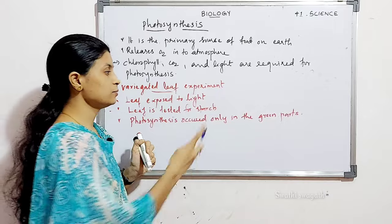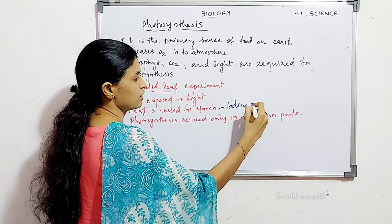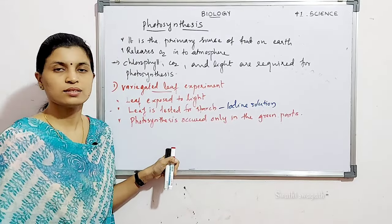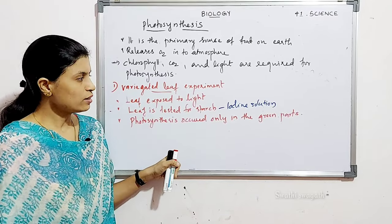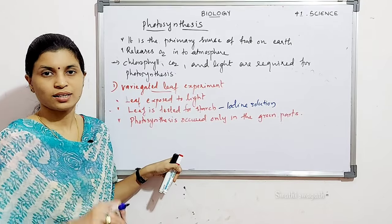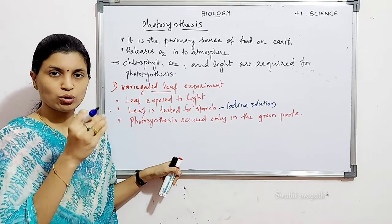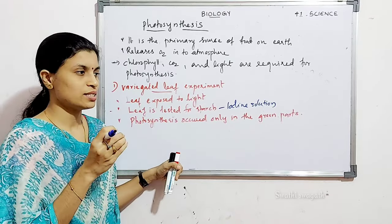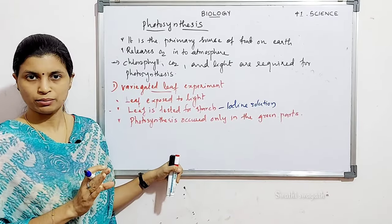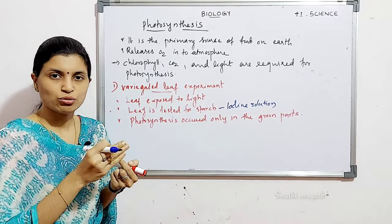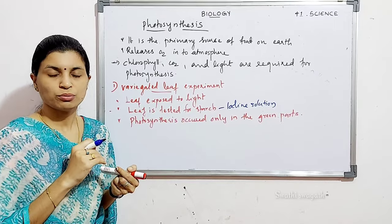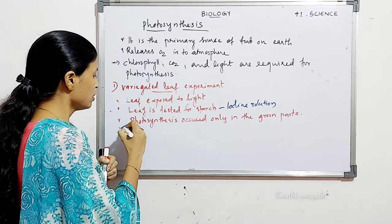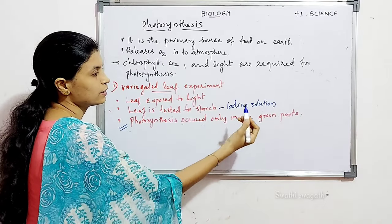The starch test is done using iodine solution. Normally, iodine solution has a golden yellow color. When iodine solution acts on starch, its color turns to dark blue or black color — that indicates the presence of starch. For example, if you cut a potato and add iodine solution, the surface turns blue because of the presence of starch. Testing the variegated leaf shows that photosynthesis occurred only in the green parts.